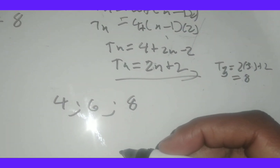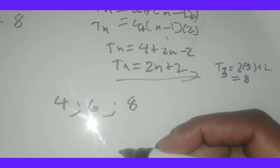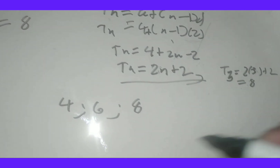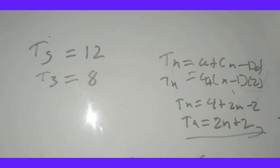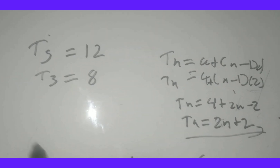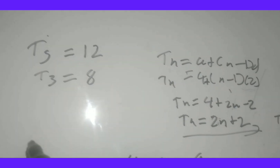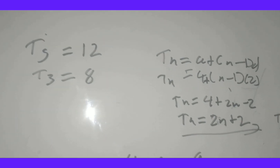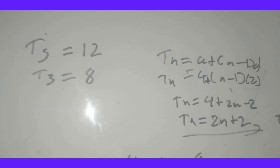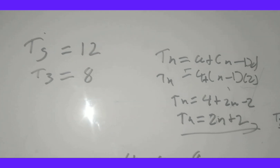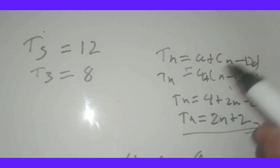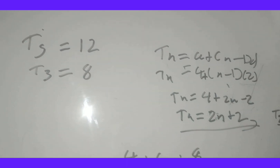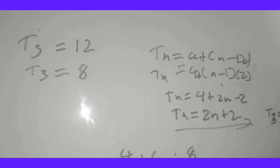Remember: whenever they give you this type of information — such as the third term equals 8 and the fifth term equals 12 — you substitute into the general formula to get two equations, then solve them simultaneously. This type of question is likely to come out in prelims.